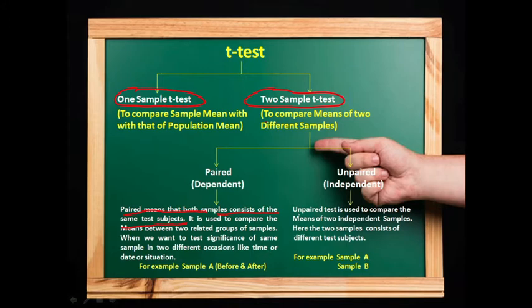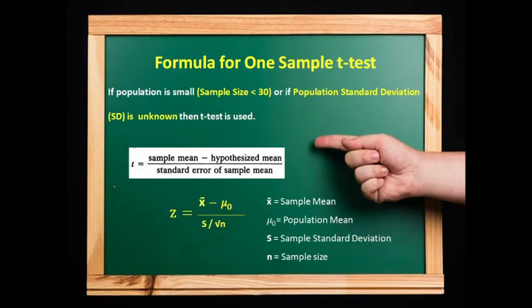In an unpaired T-test, it is used to compare means of two independent samples — for example, sample A and sample B, where the samples consist of different test subjects. In paired/dependent samples, both samples are from the same test subjects but taken on different occasions like time, date, or situations. In unpaired tests, there are two independent samples from different test subjects.